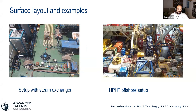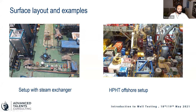This is an example of an offshore well test spread. On the left picture you can see the choke manifold, then it goes to a steam exchanger — support equipment used especially for heavy oil or foaming oil — then to the separator, and then we have surge tanks. On the right is an example of an HPHT offshore setup where, due to space constraints, equipment can be stacked on top of each other: a steam exchanger, a separator on top of it, and a surge tank.